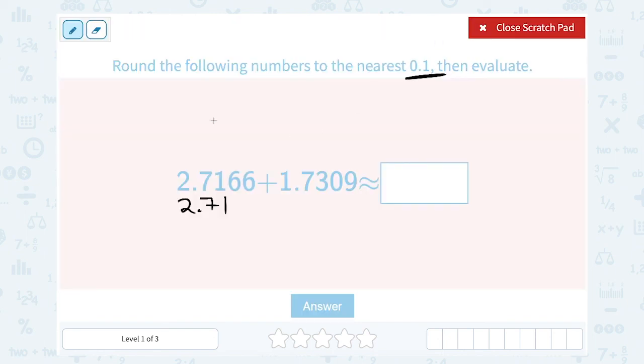Now, they said to round it to the nearest one-tenth. So to do that, I'm going to look at just the first two decimal places. So it's going to be 2 point, and it was 7, 1.